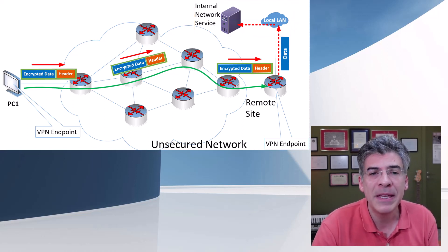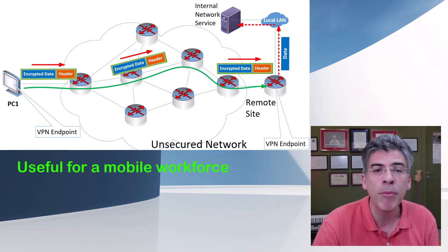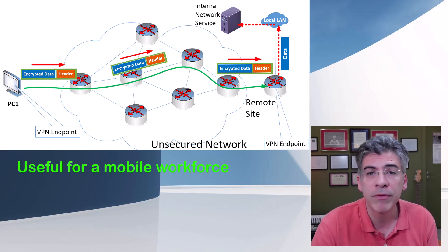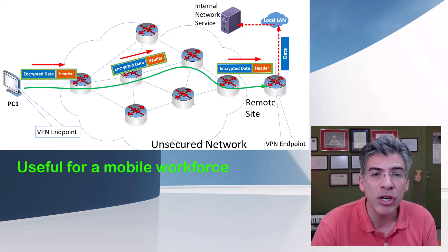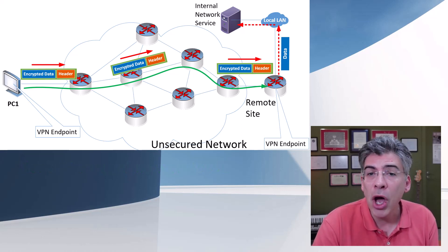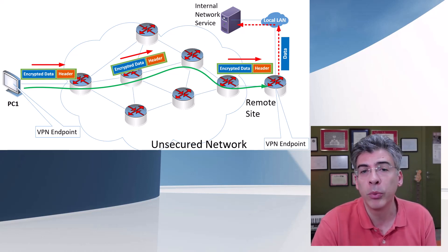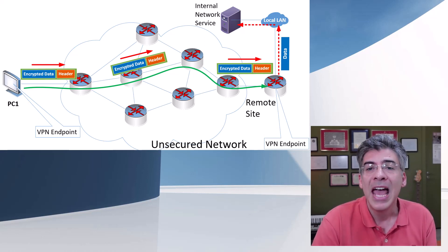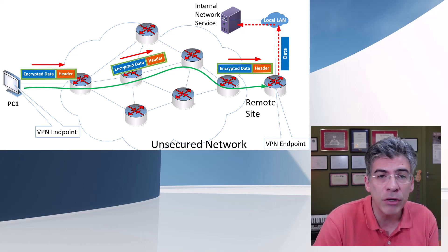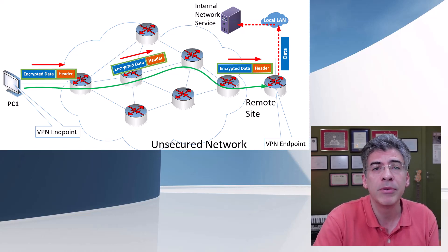Remote access VPNs are very useful for a mobile workforce, where users can connect to the corporate network from their homes or from their mobile devices, and they can access network services that are only available to internally connected devices. Like the site-to-site VPN, it does not require a subscription service. You can use VPN software available from your Windows, Mac, or Linux OS, and you can configure your VPN server on the other end on your own device, whether that's a router, a firewall, or some computer system.